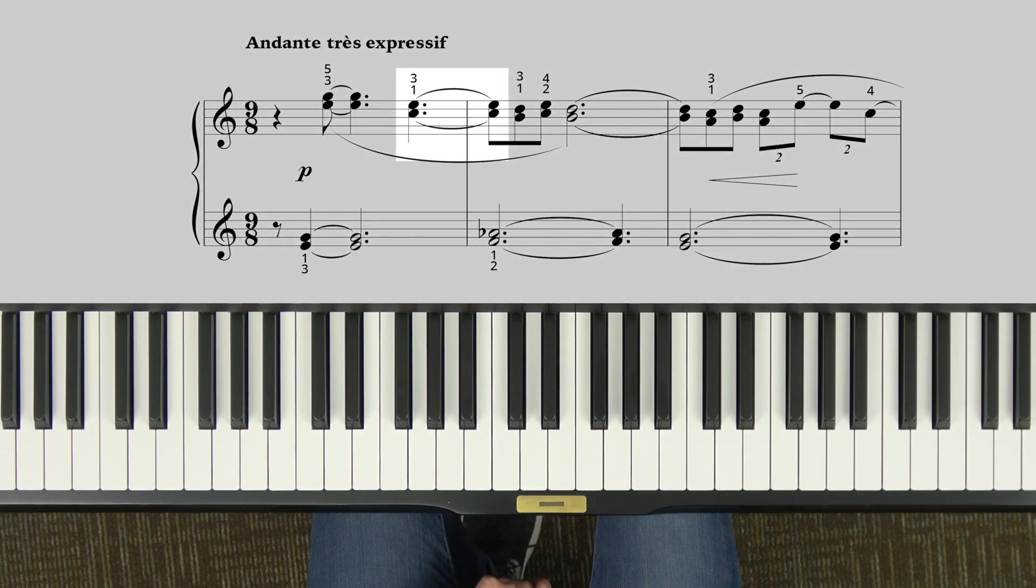Now remember, a tie is when that arc connects two of the same note. If the notes are different, it's no longer a tie. It becomes a slur. You'll see slurs throughout the piece as well. A slur means smooth and connected, legato.